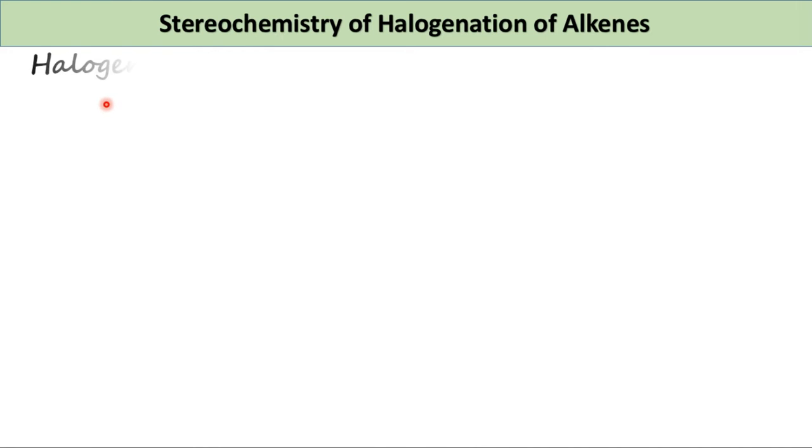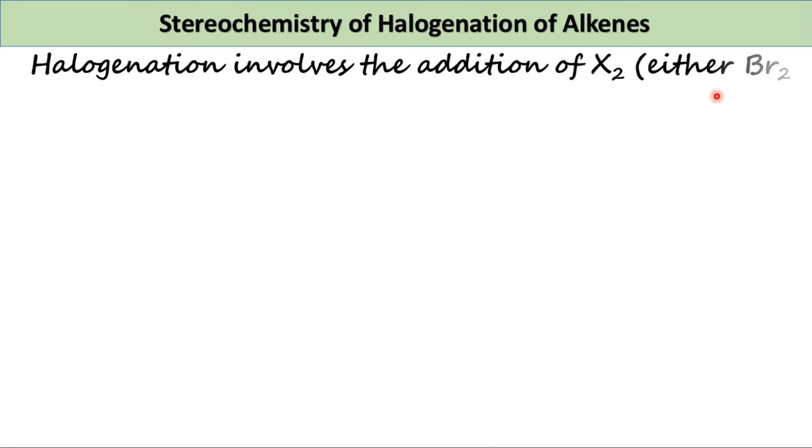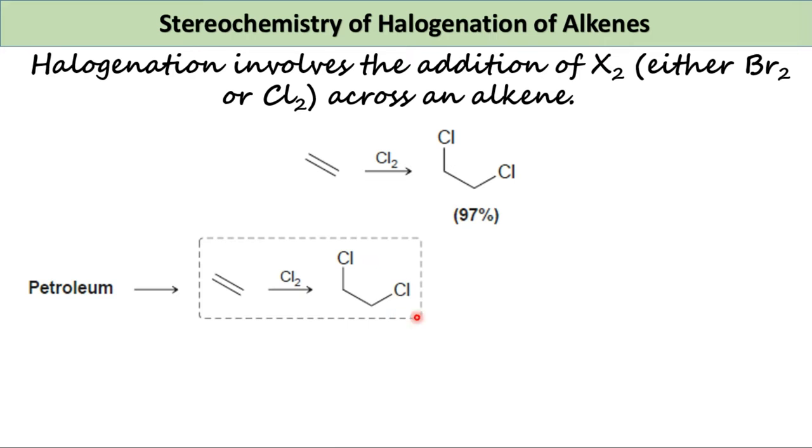Halogenation involves the addition of X₂, either Br₂ or Cl₂, across an alkene. As an example, consider the chlorination of ethylene to produce dichloroethane. This reaction is a key step in the industrial preparation of polyvinyl chloride, PVC.